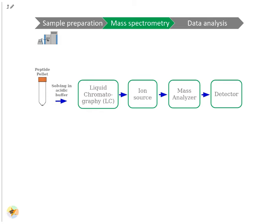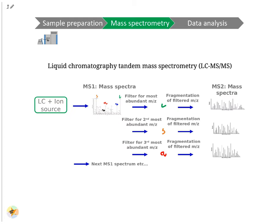Inside the MS, the mass analyzer separates peptides based on their m/z; the detector detects the peptide ions. Typically, explorative proteomics is performed via liquid chromatography tandem mass spectrometry (LC-MS/MS). While the sample elutes from the LC column, thousands of mass spectra are acquired. First, a mass spectrum of all peptides at this time point is measured — these are called MS1 spectra. From these spectra the N most abundant peptide peaks are determined and fragmented. N is typically between 3 and 20; this example shows a top-3 method.